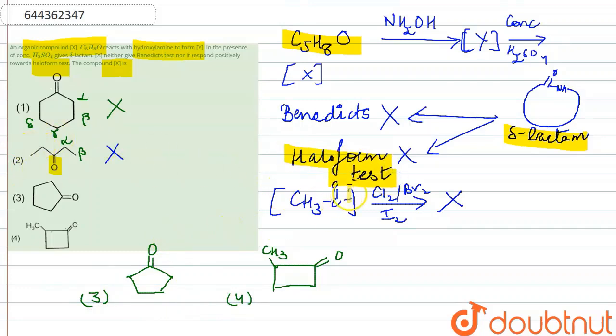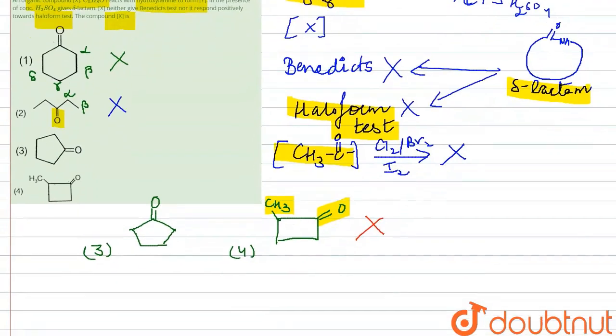But it is given to us that this does not give haloform test, and haloform test is given by methyl ketones having CH3CO linkage. The CH3 has a CO linkage here, so this means that fourth option is also incorrect. That means we are only left with the third option which is cyclopentanone. So cyclopentanone is the correct option.